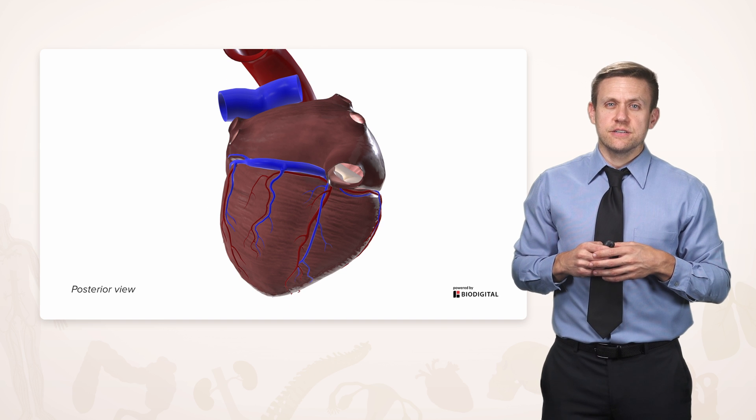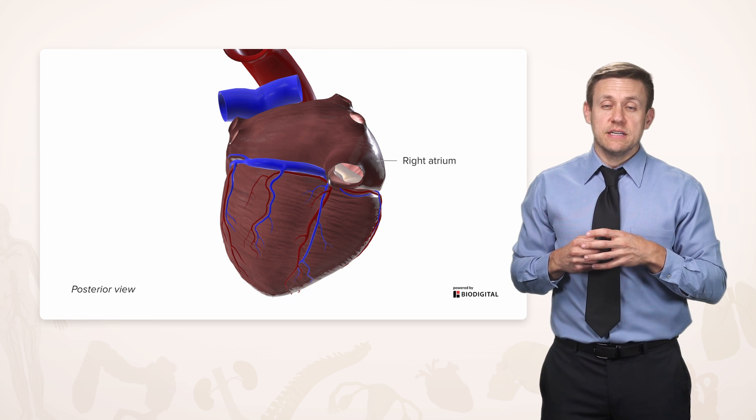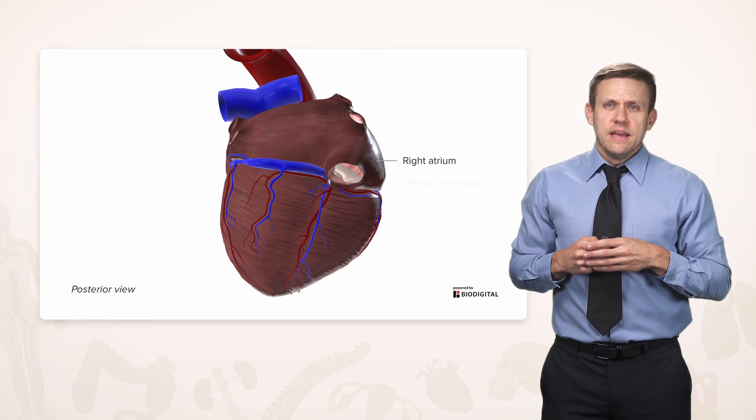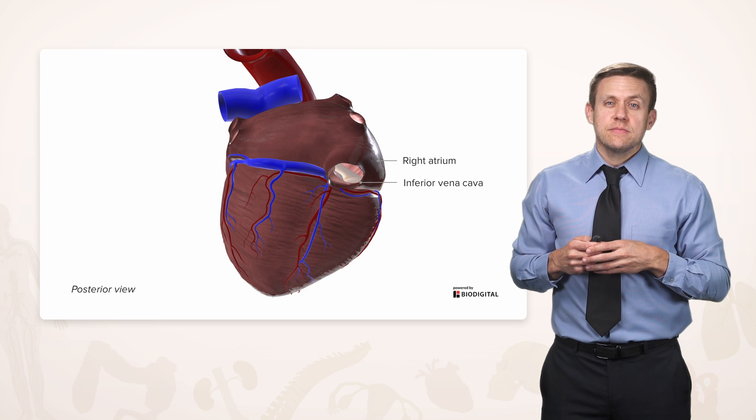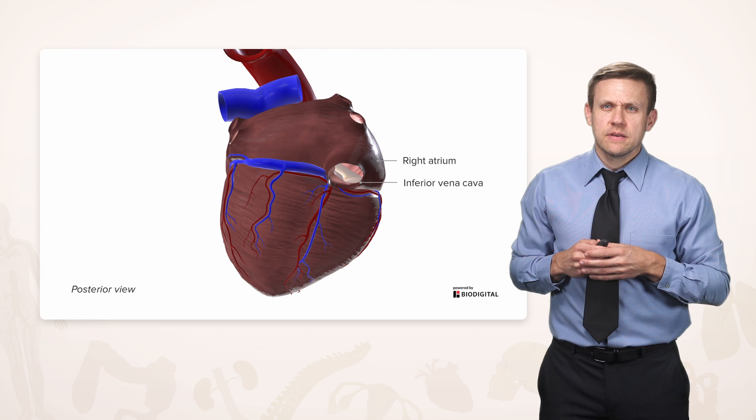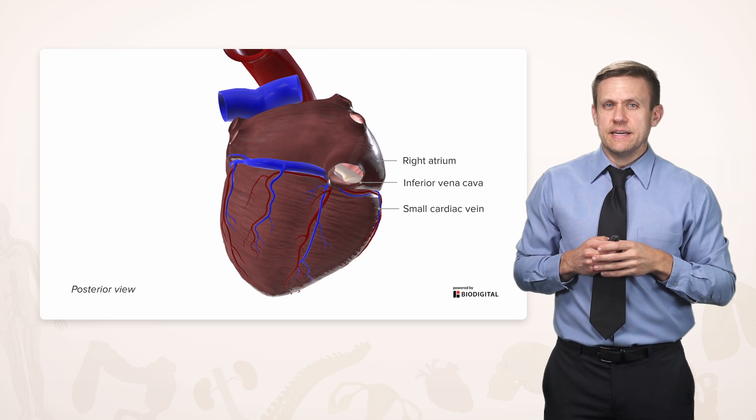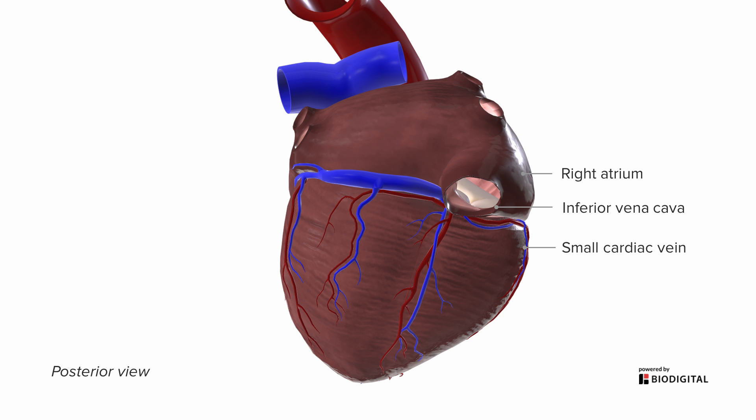If we swing around to the posterior surface, we see our right atrium where all this venous blood is headed toward, and the inferior vena cava that's providing the deoxygenated blood from below, and a little bit of that small cardiac vein we saw on the other side. Now we see the largest vein, in fact the largest vessel on the surface of the heart, which is the coronary sinus, draining most of the veins, again other than the anterior cardiac veins.